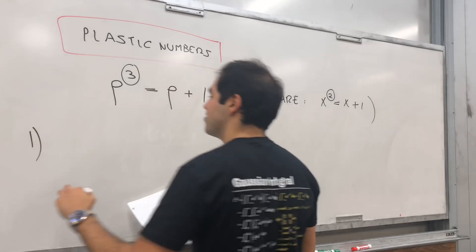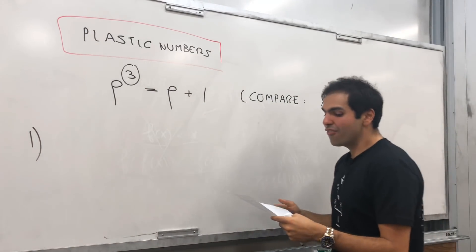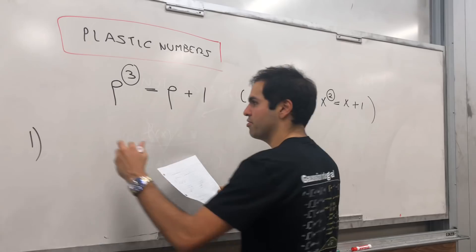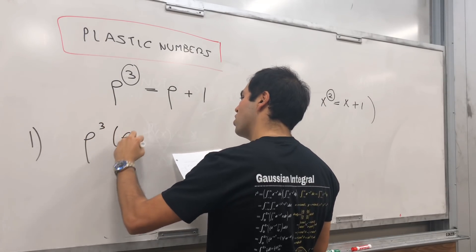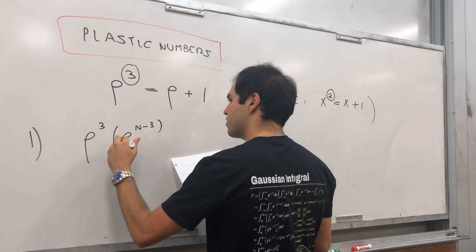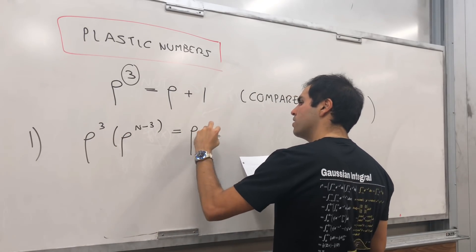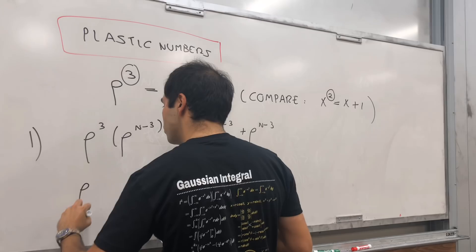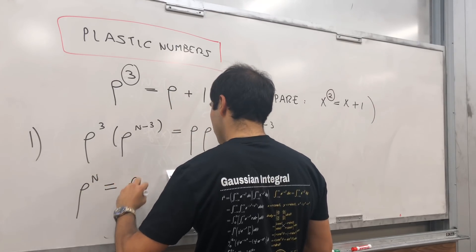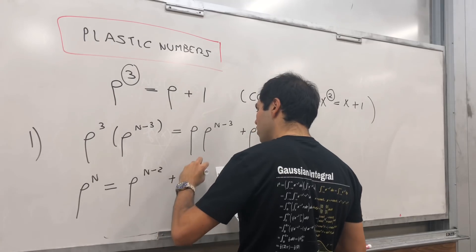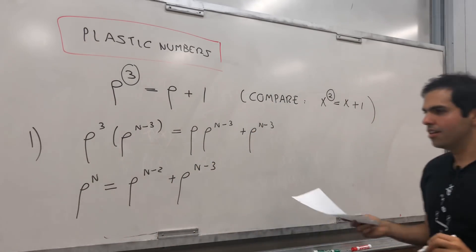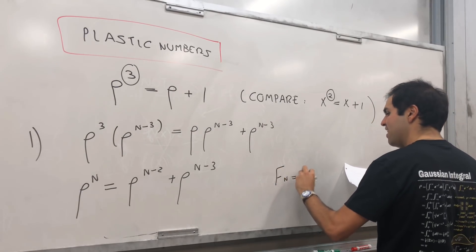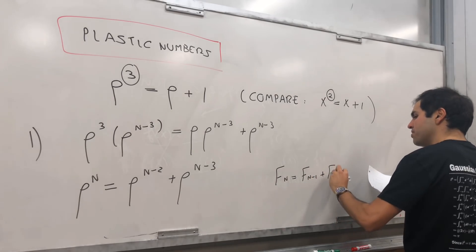So just a couple of quick properties. I guess I'll give you three of them. First of all, you can multiply this equation by rho to the n minus 3. So if you do rho cubed times rho to the n minus 3, you get rho times rho to the n minus 3 plus rho to the n minus 3. And you get rho to the n equals rho to the n minus 2 plus rho to the n minus 3.